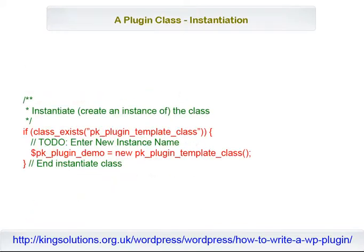We next need to instantiate, or create an instance of, the class. This code checks that the class is available and then creates an instance of the class. If we were to activate the plugin now, an instance of our class would be created, but of course nothing would happen as we haven't told it to do anything. That's where actions and filters come into the equation.